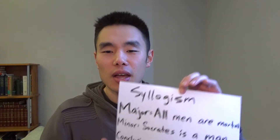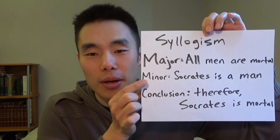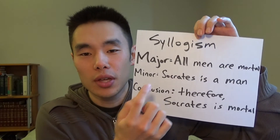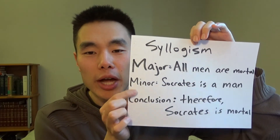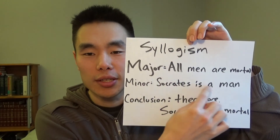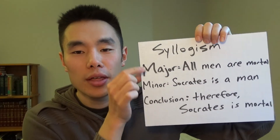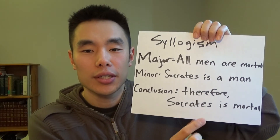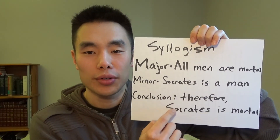But technically, the more complete form of an argument is what Aristotle calls a syllogism. A syllogism consists of three propositions: major premise, minor premise, and conclusion. In this example, 'all men are mortal' is the major premise — a universal proposition. 'Socrates is a man' is the minor premise — a particular proposition. And the conclusion is 'Socrates is mortal.' So: all men are mortal, Socrates is a man, therefore Socrates is mortal.